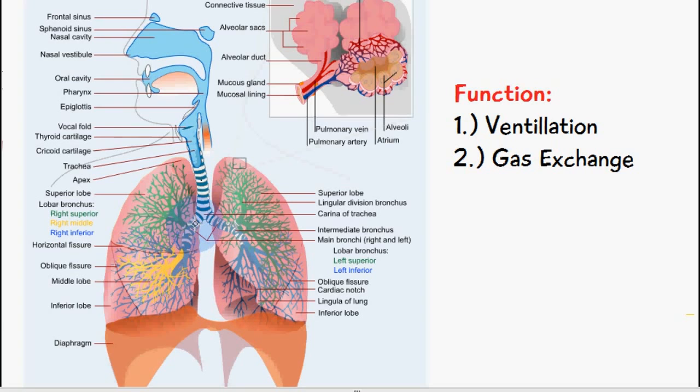So we have the bronchus here. This is the primary bronchus and it's going to separate into secondary bronchus and then tertiary bronchus. And then following on from this you're going to get bronchioles and then following on from that you're going to get alveoli which you can see in this image here.